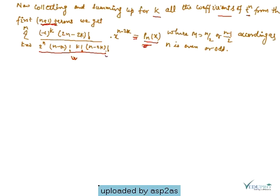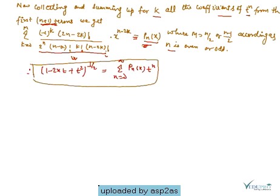This equation equals the Legendre polynomial, where M equals n/2 for even n and (n-1)/2 for odd n — it depends on whether n is even or odd. So this shows that (1 - 2xt + t²)^(-1/2) equals the summation of t^n · Pn(x), which completes the proof.